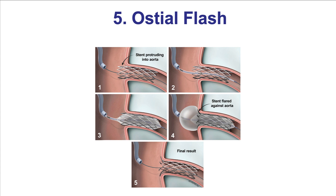Number five type of balloon is the osteo-fluss balloon. This is a unique balloon — it is actually two balloons combined. There is a more distal balloon that is sized one-to-one with the proximal vessel, and then there is a larger balloon that inflates at low pressure, up to eight atmospheres. What this balloon does is it flares the struts of the stent against the ostium of the stent, making repeat engagement of that vessel easier and preventing the stent from protruding into the aorta and hindering repeat engagement with catheters.